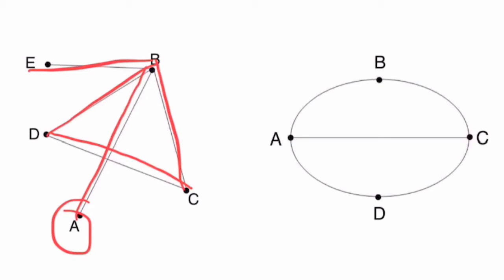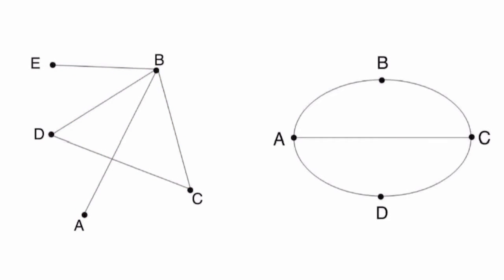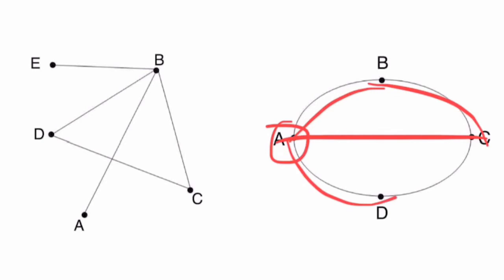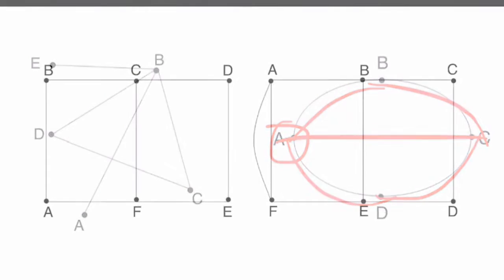For our second example, if we start from vertex A, we could go from A to B, B to C, C to A, A to D, then D to C. Again, we used every edge exactly one time with no repeats.